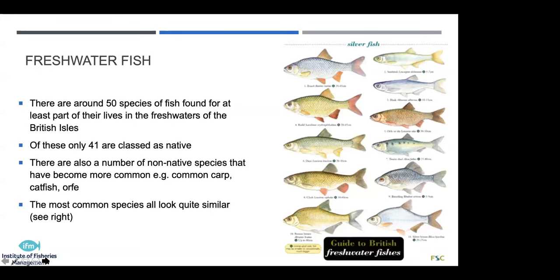Freshwater fish — there are around 50 species of fish found in British shores that live some or all of their lives in fresh waters. Some people will say 51, 52, 53 — we'll round it up to 50. We've got about 41 of these that we class as native, and the rest is made up of non-native species that have become more common, such as common carp, Wels catfish, orfe, and some invasive non-native species like the sunbleak and topmouth gudgeon. As you can see from the FSC field guide, they all look pretty similar, so we need to look at ways to classify and identify individual species.